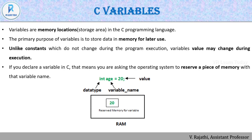When you declare a variable in C, you are asking the operating system to reserve a piece of memory with that variable name. For example, declaring an integer will allocate two bytes — or four bytes if you are using a 64-bit OS. For example, 'int age = 20': here int is the data type, age is the variable name, and 20 is the value. The RAM allocates the value 20 in that two-byte allocation.